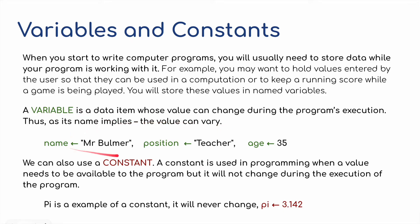For example, name. Mr. Bulmer has been assigned to the value name. Hence the little arrow here. But it could be Mr. Bulmer, it could be Mr. Smith, it could be Mr. or Mrs. Anybody. The position, teacher, or whatever position that person has got. And the age, of course, would be a numeric value, and that would be stored in the variable age.